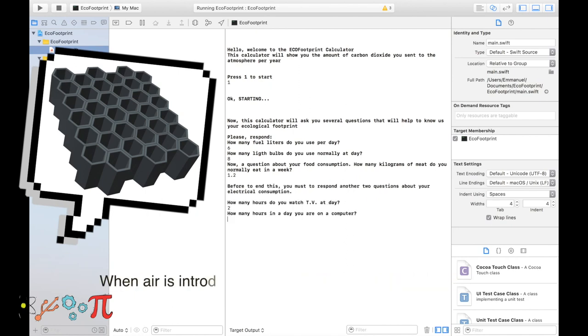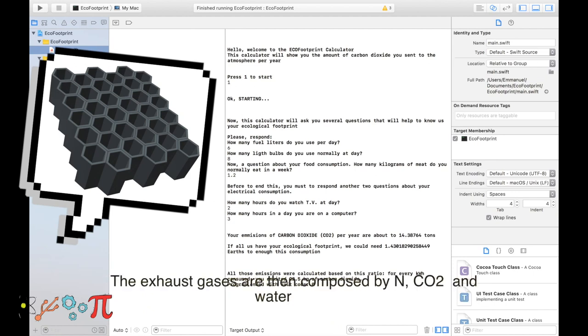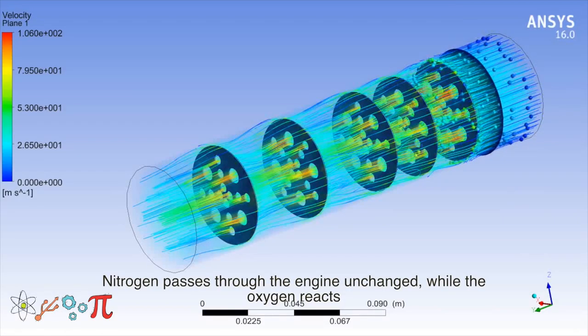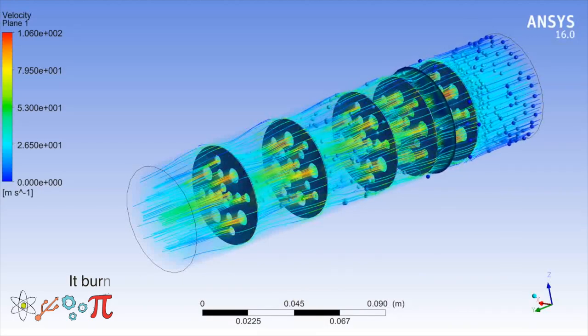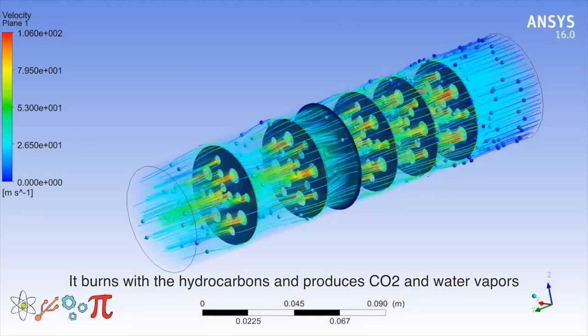When air is introduced into the engine, it is mixed, and its composition consists of 78% nitrogen, 21% oxygen, and 1% of other gases. The exhaust gases are then composed of nitrogen, carbon dioxide, and water vapor. The nitrogen passes through the engine unchanged, while the oxygen reacts, it burns, with the hydrocarbons and produces the carbon dioxide and the water vapors.